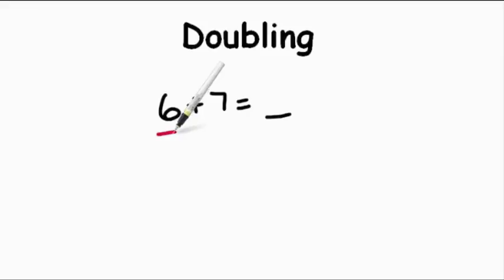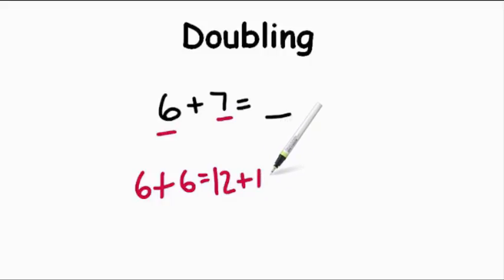I personally would have chosen to double the six. So six plus six, what does that equal? That's right. It equals twelve. And I know that seven is one more than six. So I have to add one more on there. So I add one more back in. And that gives me thirteen. So six plus seven means it must equal thirteen.